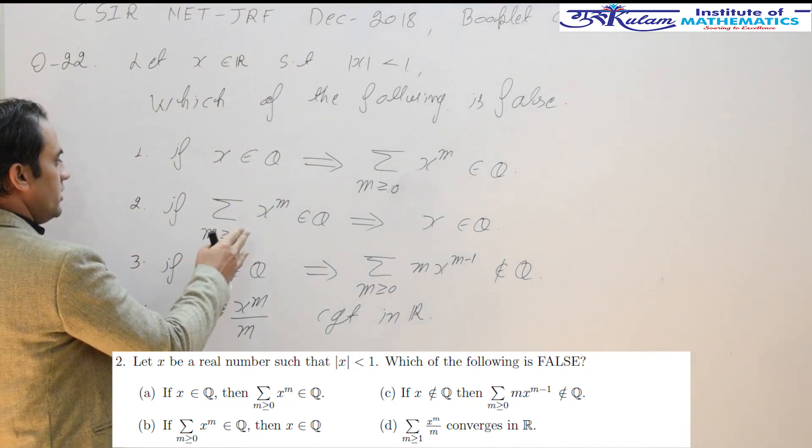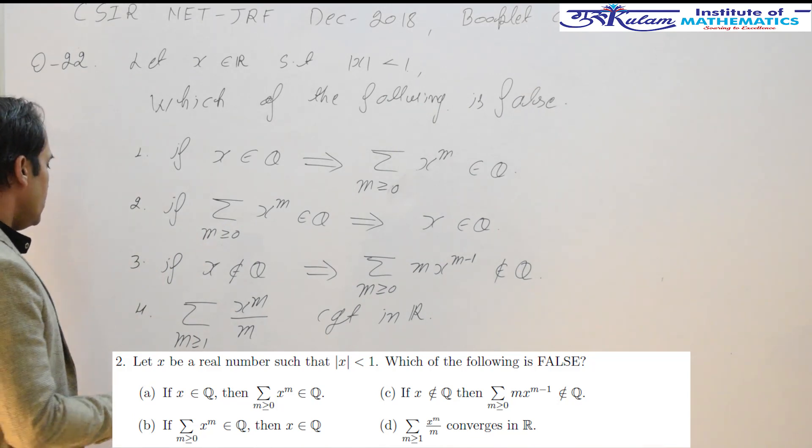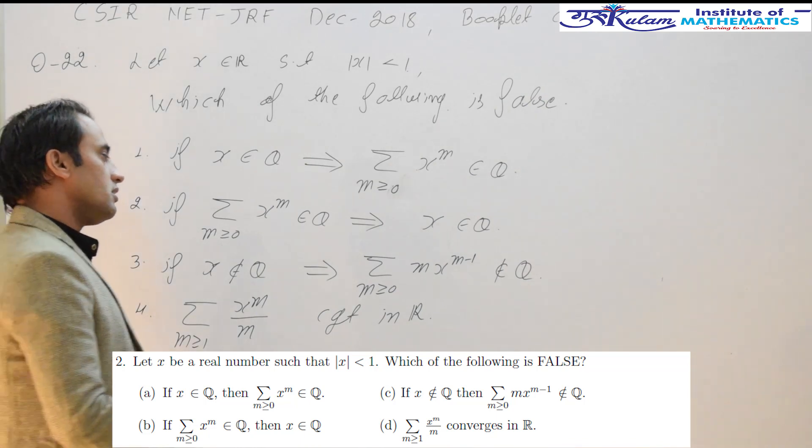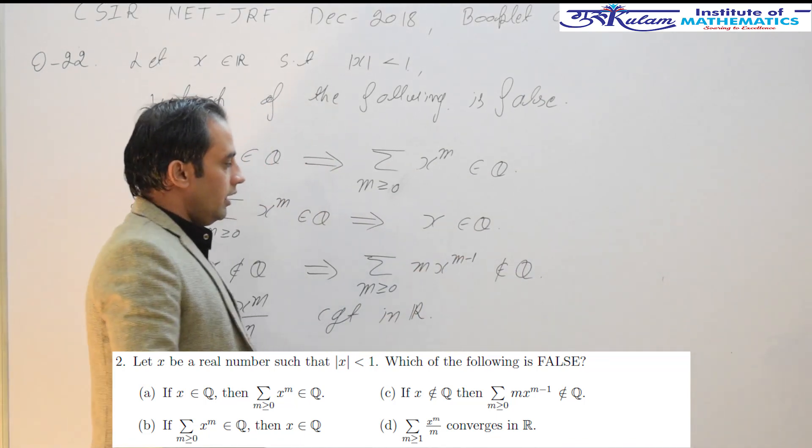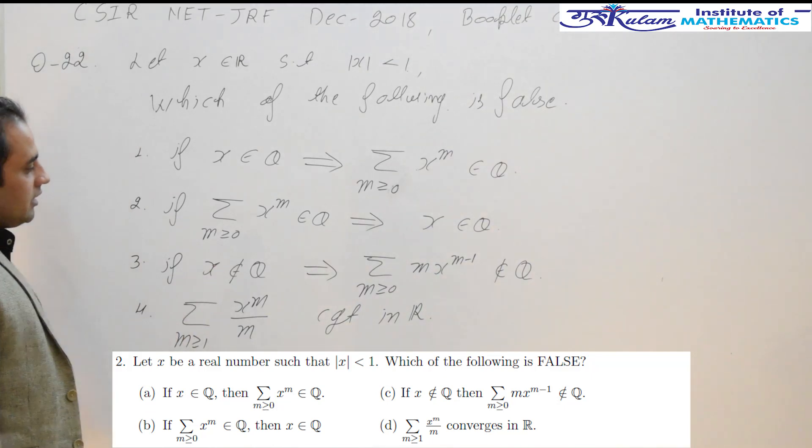Second, if the sum of this series is a rational number, then x must be a rational number. Third, when x is not a rational number or irrational number, then the sum of this series is also an irrational number. Option D: this series is convergent in R.